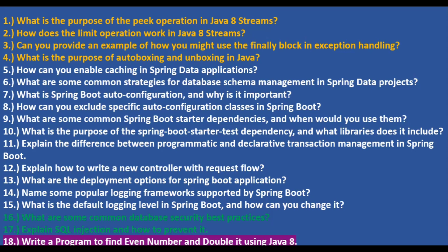Can you explain how to write a new controller with request flow? You start by writing a repository, then a service where you inject that repository, then a controller where you inject the service. When a client makes a request to the controller, it is delegated to the service, which calls the repository to get data from the database, then sends it back up to the controller, which returns it to the client as JSON or HTML.